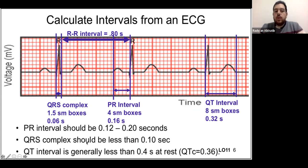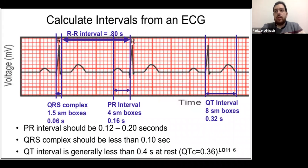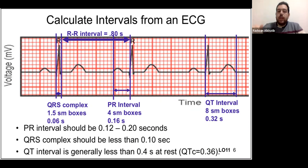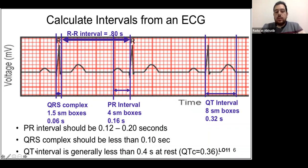The QRS complex should be less than 0.1 seconds — that's just under three small boxes. If it's more than three small boxes, we call it a wide QRS complex, which indicates the QRS is being generated from the ventricles rather than conducted through the normal AV node pathway. A QRS wider than three small boxes is pathological.